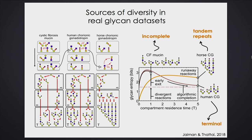There are three compositionally distinct regions of the Golgi, though other species — some plants — have many more. Here are the glycan data structures: the mucin glycans in your lungs, from a patient with cystic fibrosis; the glycans attached to HCG, the pregnancy hormone; and the glycans attached to horse CG — the horse pregnancy hormone. You can see they're all related but distinct. These are not exactly the same as my test case — my talk has been about making a single unique structure.